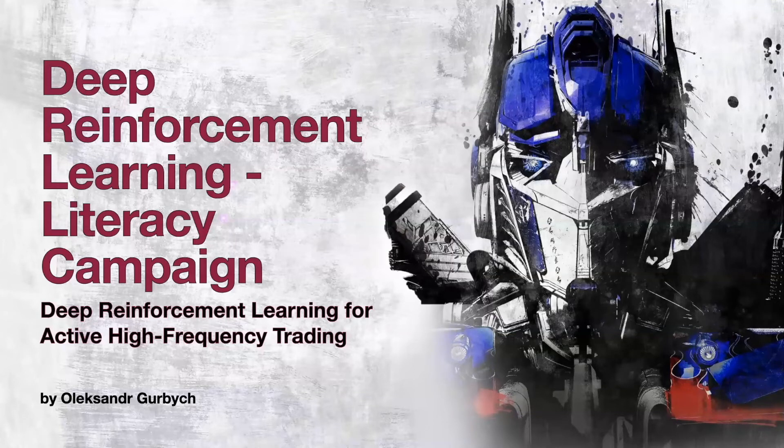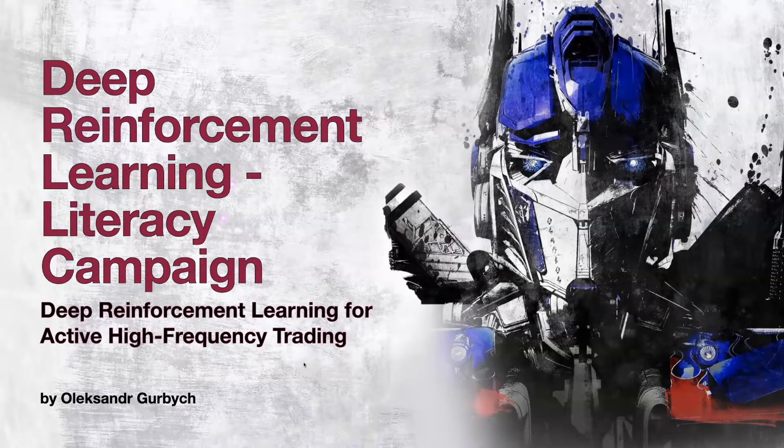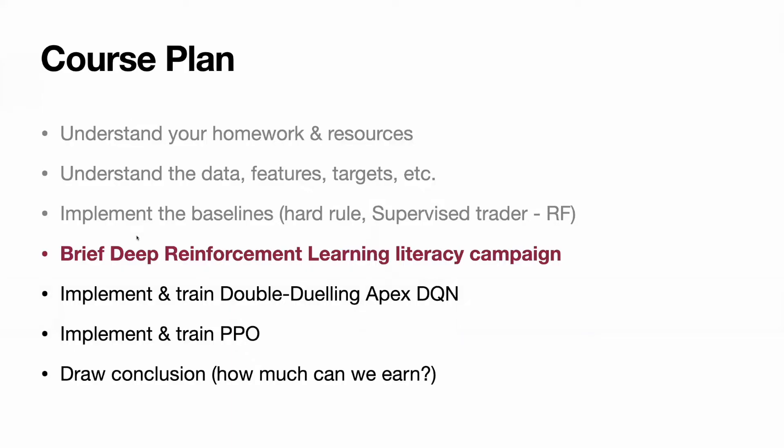I'll start from deep RL basics and slowly go to complicated models like A3C and PPO. We passed the first half of the course. Right now we are at the step of deep reinforcement learning literacy campaign. So we go over where the things come from and why, how they work, and where the neural networks are.